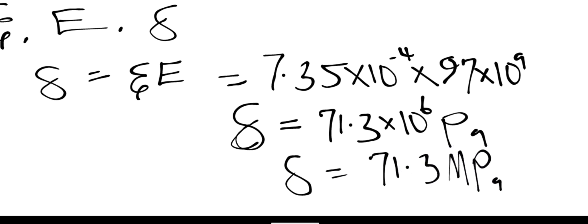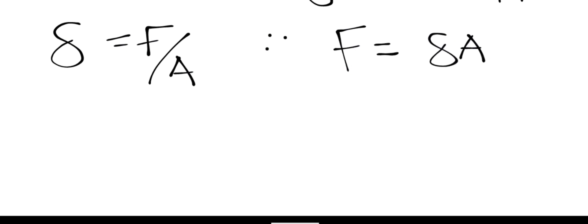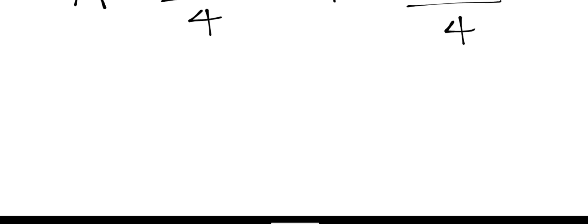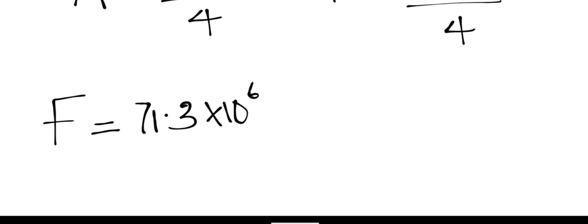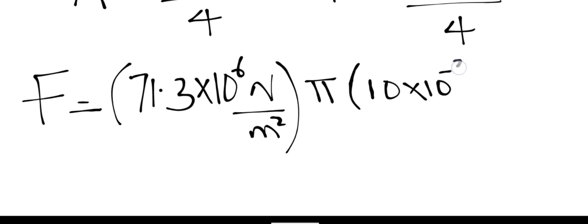The question asks me to find the force. Using stress = force / area, force = stress × area. The area of the circular cross-section is πd²/4, so force = stress × π × d² / 4. Substituting: force = 71.3 × 10⁶ Pa × π × (10 × 10⁻³ m)² / 4. Pascal is newtons per meter squared.